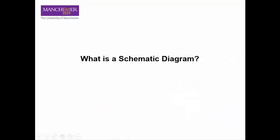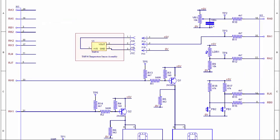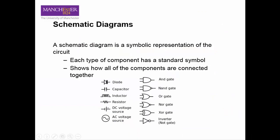What is a schematic diagram? A schematic diagram, or circuit diagram, is an abstract symbolic representation of a circuit. It shows how all of the components are connected together electrically. However, it does not show how they are connected together physically. Each type of component has a standard symbol.